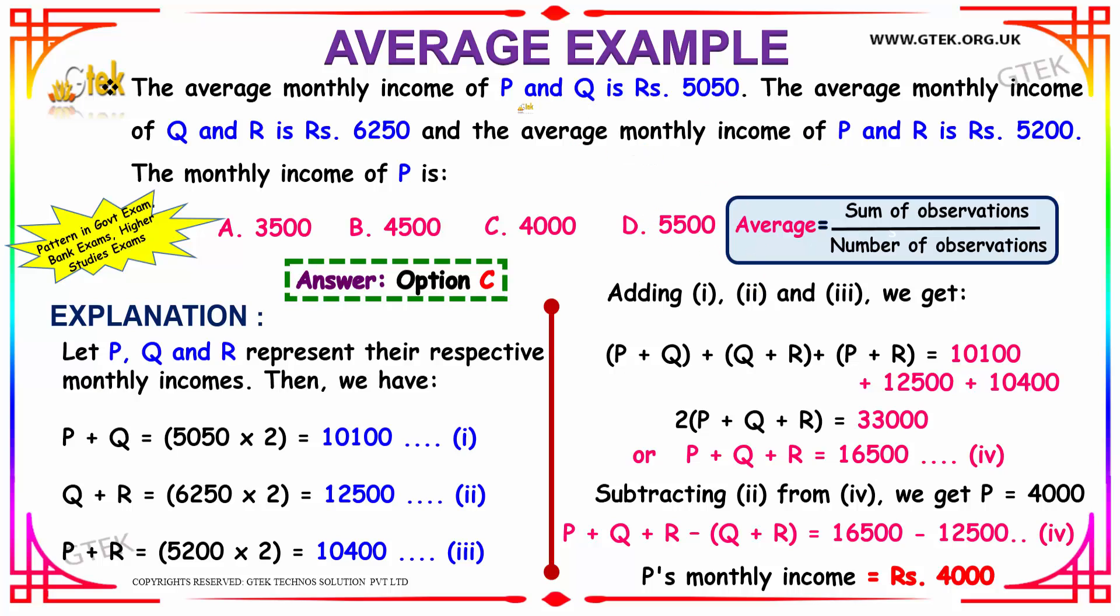It is given that P, Q and R are the monthly incomes. The average monthly income of P and Q is given. We know the number of observations, so sum of observations is P plus Q equals average, that is 5050, into number of observations, that is 2, which is equivalent to 10100.